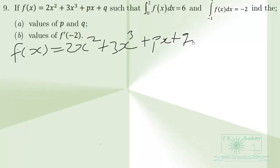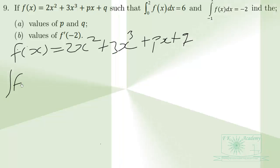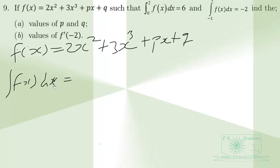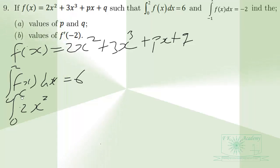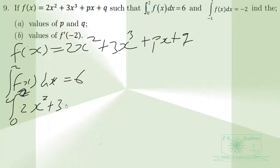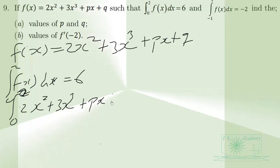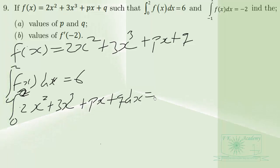So when we integrate f of x, the integral from 0 to 2 of 2x squared plus 3x cubed plus px plus q dx is equal to 6.